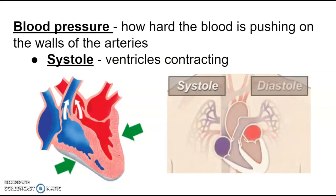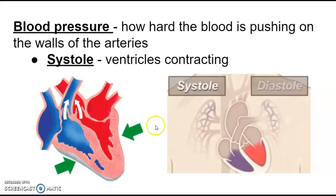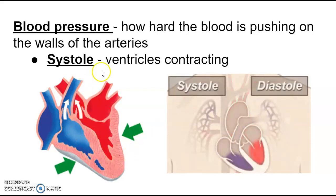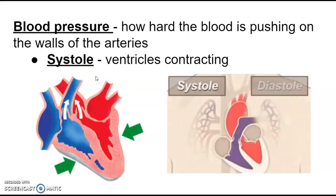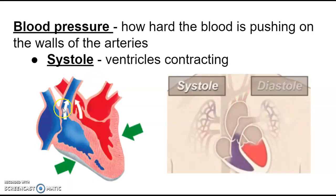There are two different numbers we're going to talk about and two different things happening in the heart. In the heart, we have systole — you can think of systole as squeeze. This is when the ventricles are contracting and squeezing. The ventricles pump blood out of the heart, either to the lungs or to the rest of the body. When systole is happening, there's a lot of blood going into the arteries, and the pressure is going to be really high. If we were to measure blood pressure at the point when the heart is squeezing, we would get a higher number.